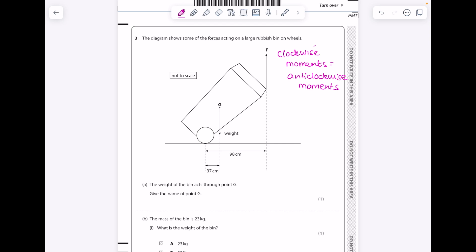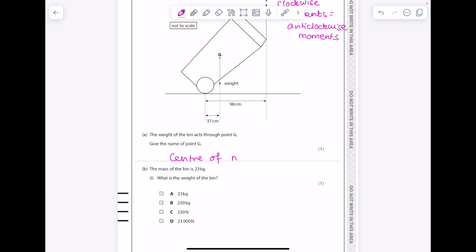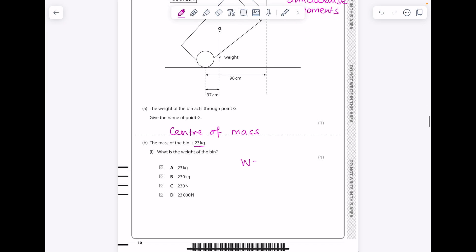Here's a diagram showing some of the forces acting on a large rubbish bin. The weight of the bin acts through point G. Give the name of point G - that is the center of gravity or center of mass. The mass of the bin is 23 kg. What is the weight of the bin? You're going to get that physics equation sheet again in paper 2, so no excuses to not pick out the right equation. We're after the weight, we've been told the mass is 23, we need to times it by 10.